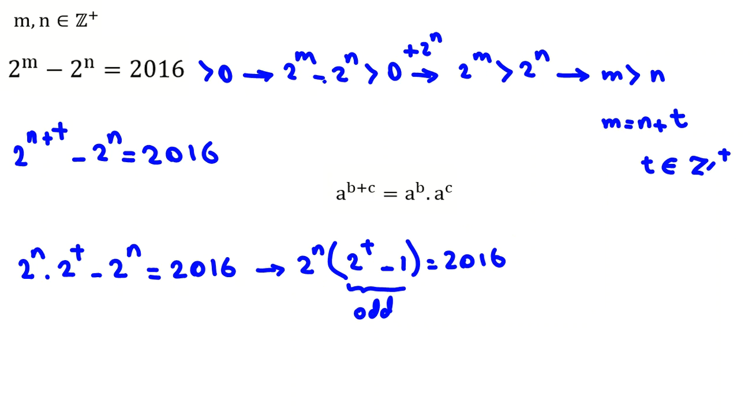If you prime factorize 2016, we divide by 2 as much as we can. It will be 2 to the 5, and then the rest we can write as 63.